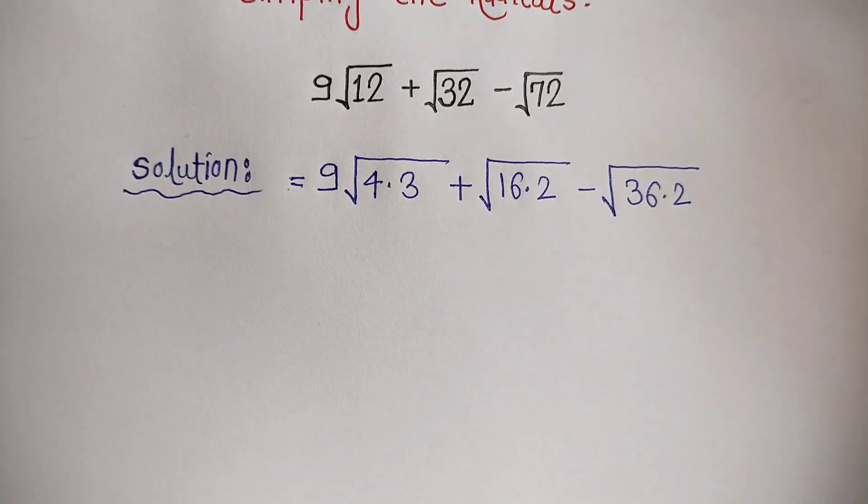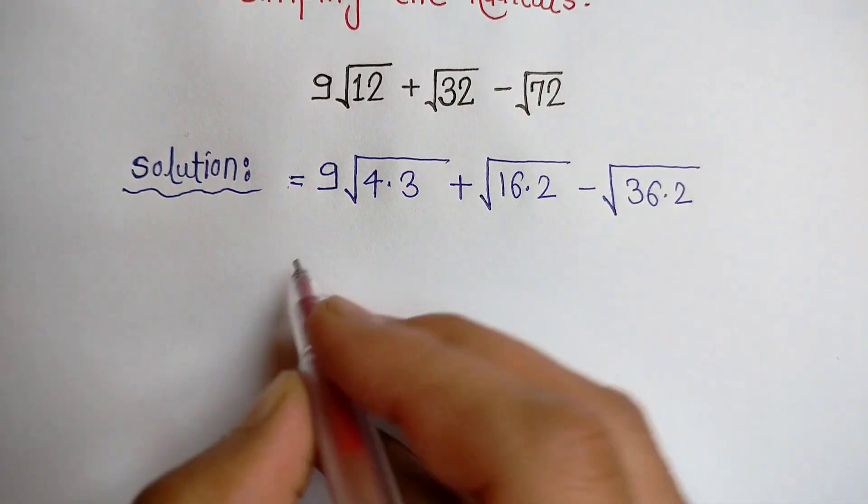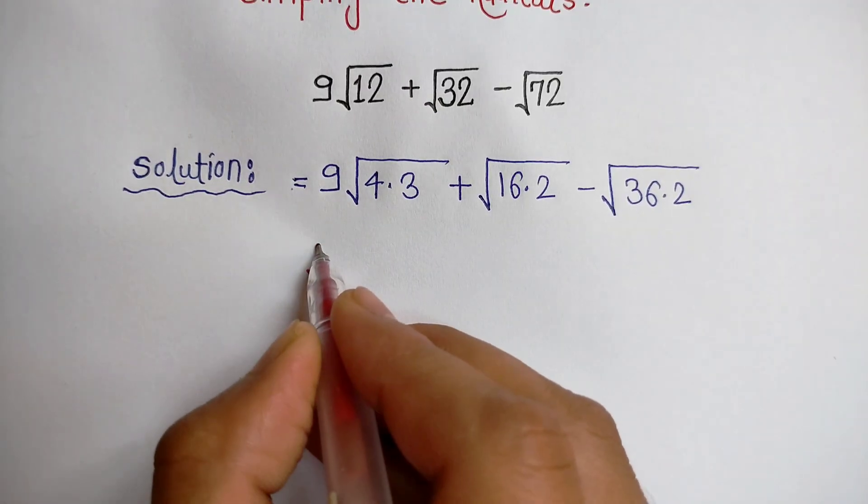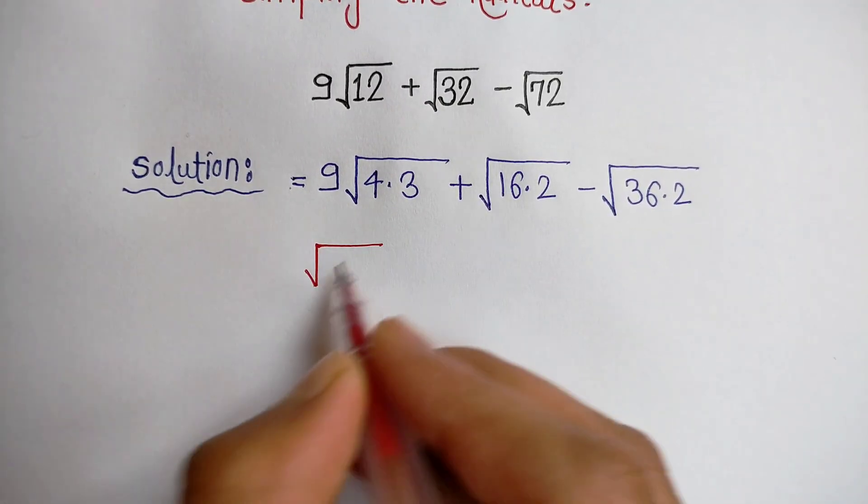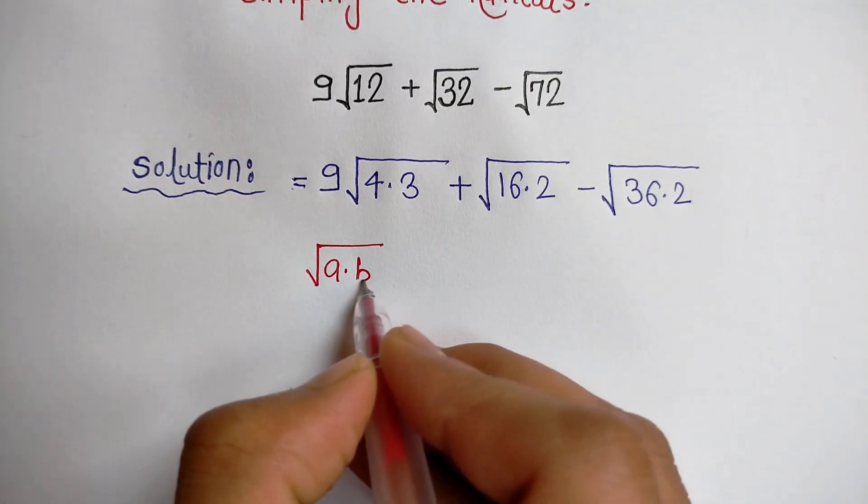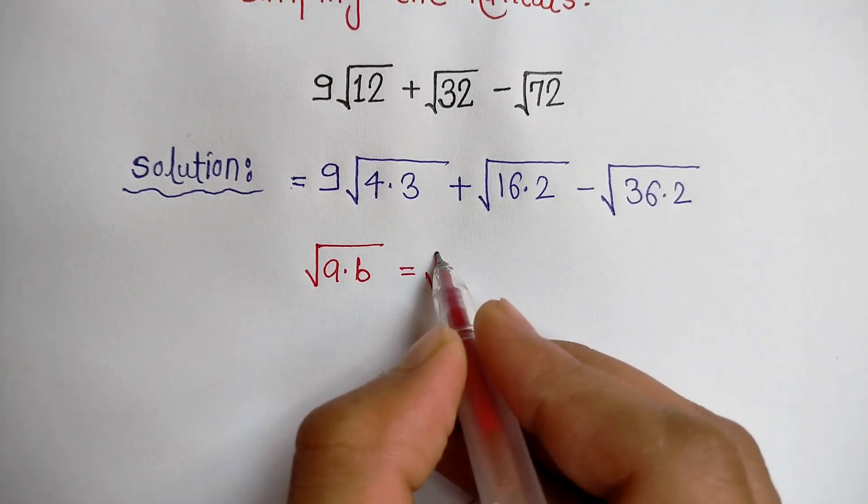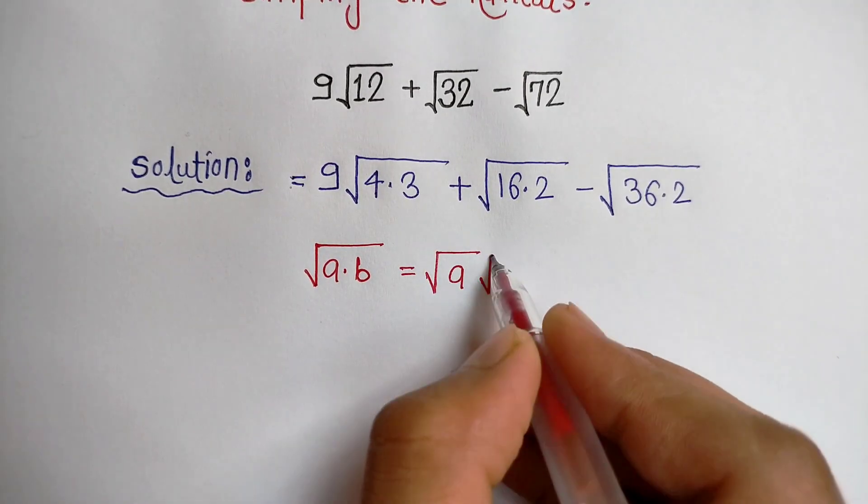Now we know the square root rule that is √(ab) = √a × √b.